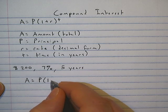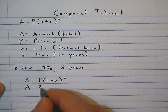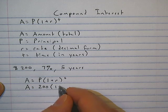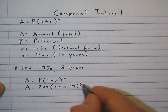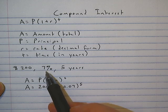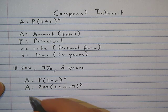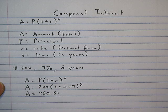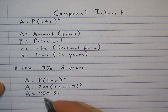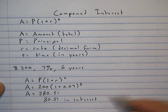Write down our formula: A equals P times (1 plus r) to the t. Plug in our values: A equals 200 times (1 plus 0.07) to the 5th power. Remember, it's a percentage, so we move the decimal two places to the left. If we throw that in the calculator, our amount comes out to $280.51. That's how much would be in our account, which means we made $80.51 in interest.